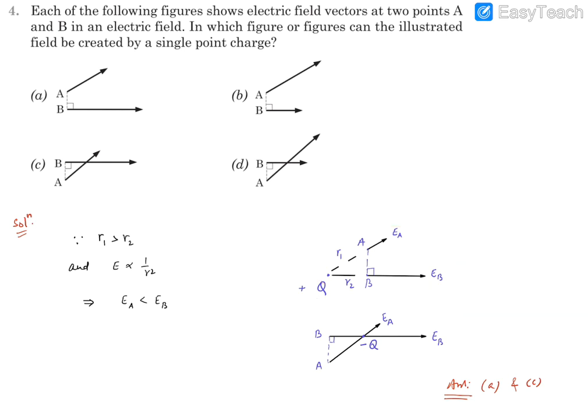So let's say a point charge is placed over here. This is point B. This is point A. And this distance is, let's say, R2. This distance is R1.